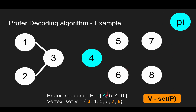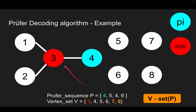For the next iteration, pi is 4. The smallest element in the yellow set is 3. We connect the smallest vertex with vertex pi. We remove 3 from V and remove pi from P. After removing pi from P, since 4 still exists in P, there is no update needed to the yellow set.